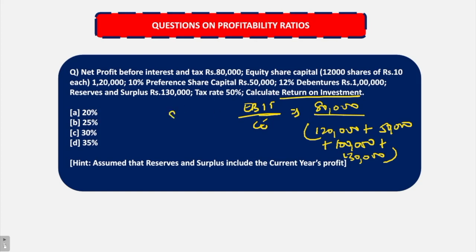80,000 upon 4 lakh into 100. So the answer comes out to be 20%. So return on investment is 20%.